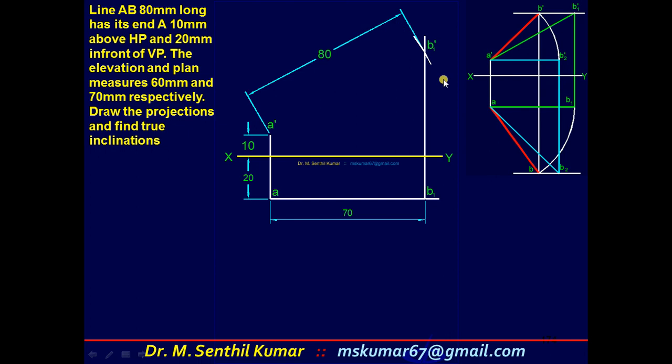With A' as center and 80 as radius, cut an arc. You will get B1'. Join A'B1' - that is the preliminary front view line. The preliminary front view set is over. Measure this angle theta: theta is equal to 29 degrees.